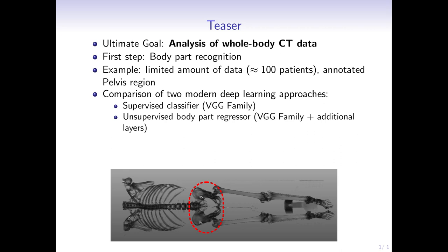In this work we compare two modern deep learning approaches for body part recognition, namely a supervised classifier and an unsupervised body part regressor.